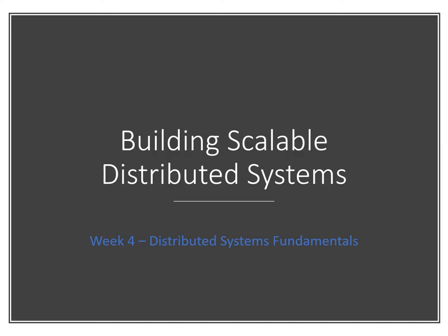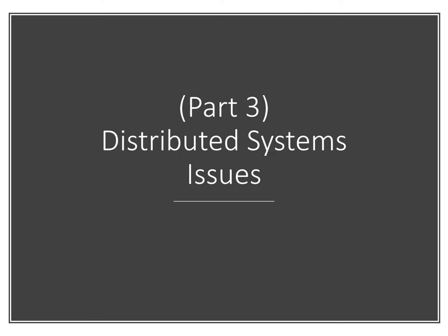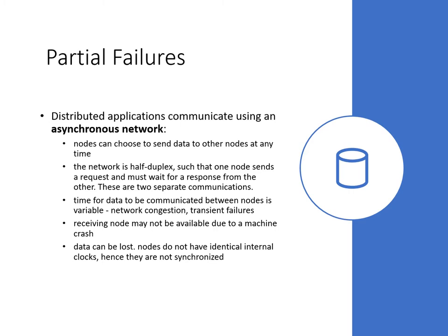Let's complete the materials for week four of building scalable distributed systems by looking at some more distributed systems fundamental issues. These are inherent in any distributed system that we build, so it's really important that you understand their implications. The first issue we're going to discuss has to do with distributed systems communicating over a network. In communications terminology, the shared local and wide area networks that our systems communicate over are known as asynchronous networks. With an asynchronous network, nodes can choose to send data to other nodes at any time.